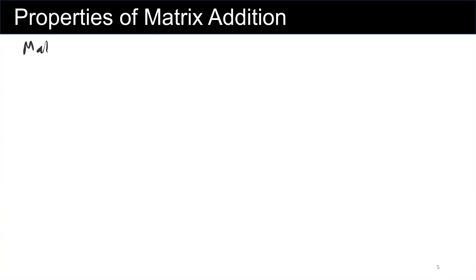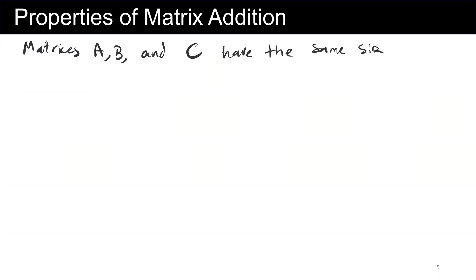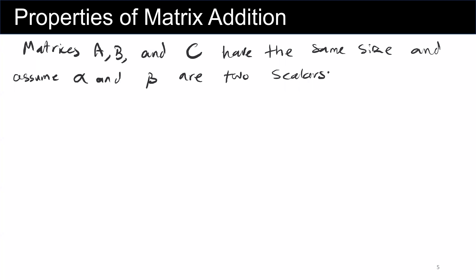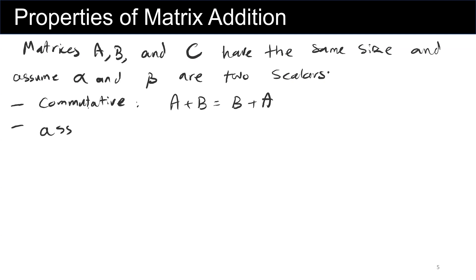Let's assume matrices A, B, and C have the same size, and also assume that alpha and beta are two scalars. The first property is the commutative property of matrix addition: A plus B is equal to B plus A. The second property is the associative property of matrix addition: A plus (B plus C) is equal to (A plus B) plus C.